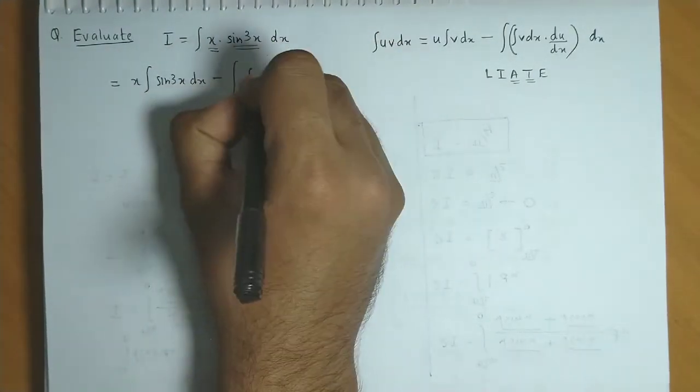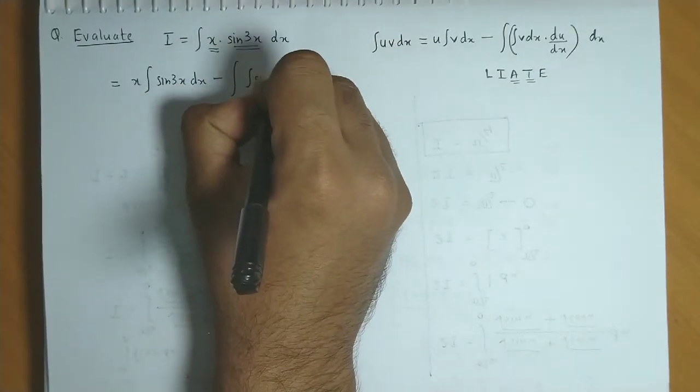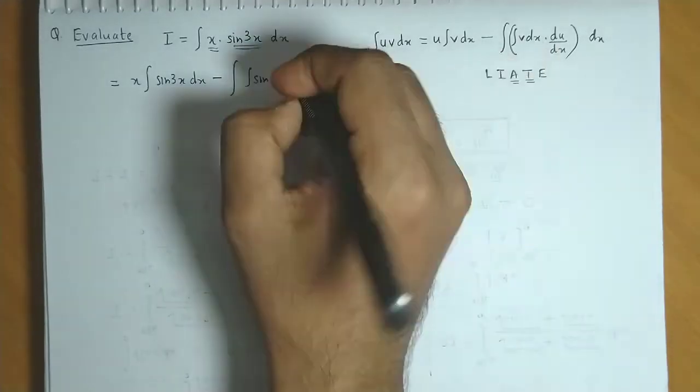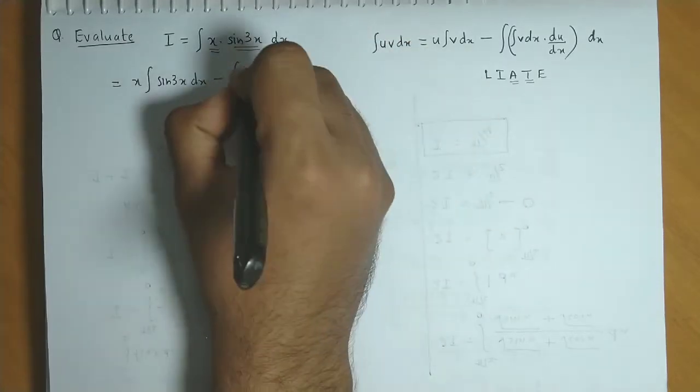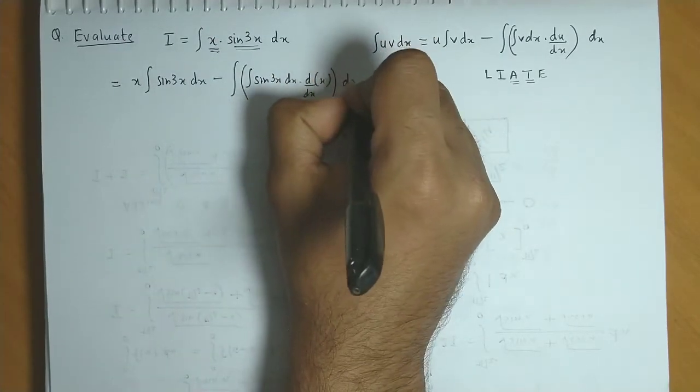integration of v, that is integration of sine 3x dx, times derivative of u, that is derivative of x, and we write dx.